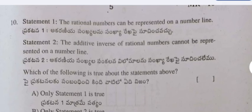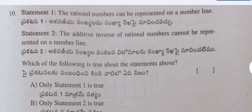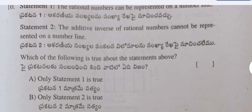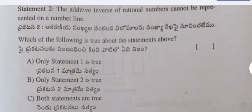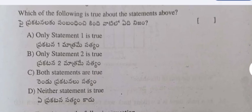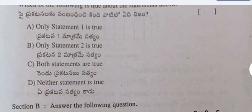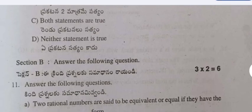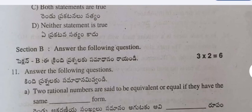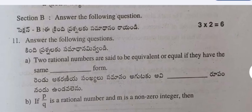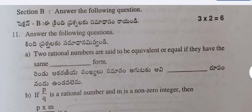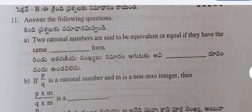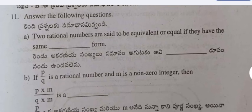Question 10: Statement 1 — rational numbers can be represented on the number line. Statement 2 — the additive inverse of rational numbers cannot be represented on a number line. Which of the following is true? (A) Only statement 1 is true; (B) Only statement 2 is true; (C) Both statements are true; (D) Neither statement is true.